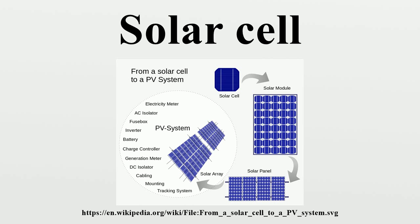Assemblies of solar cells are used to make solar modules which generate electrical power from sunlight, as distinguished from a solar thermal module or solar hot water panel. A solar array generates solar power using solar energy.